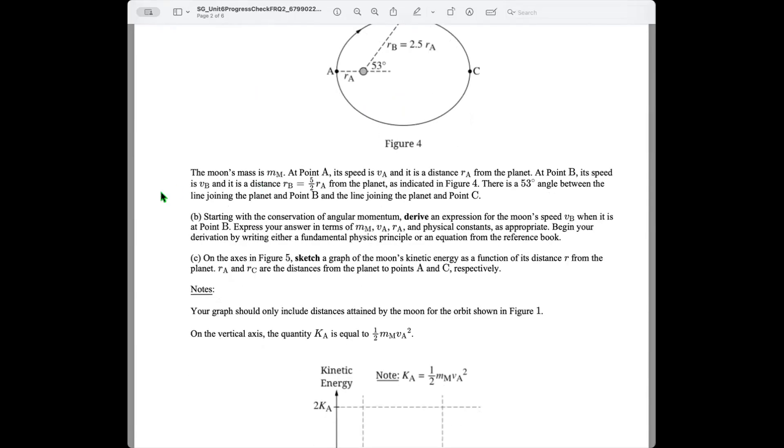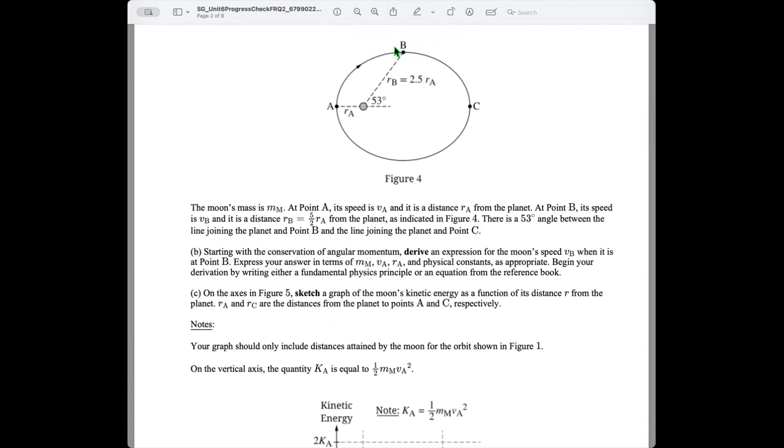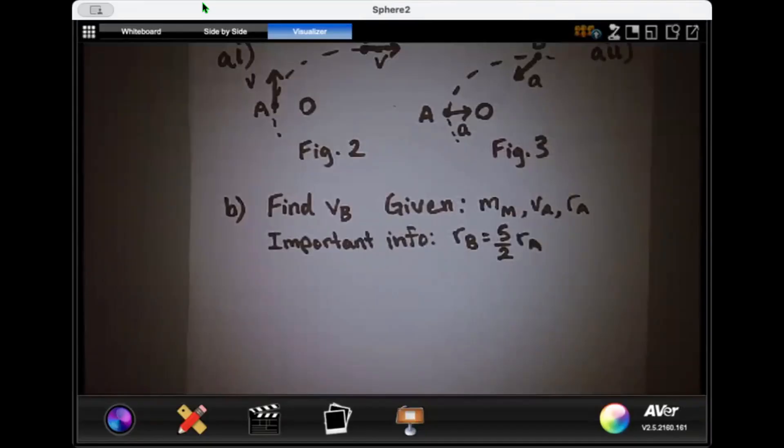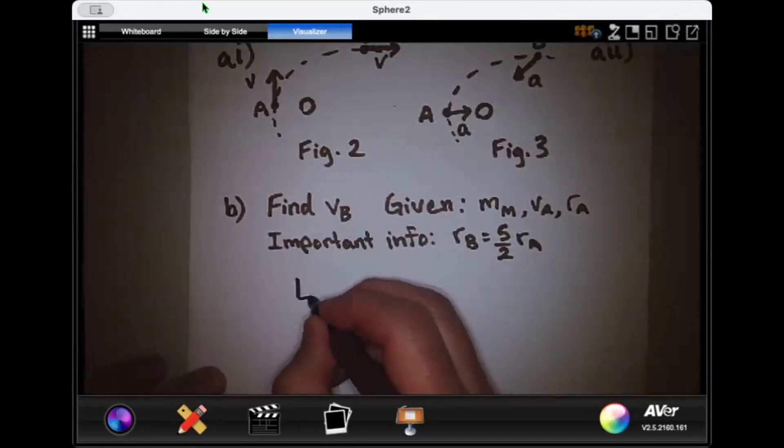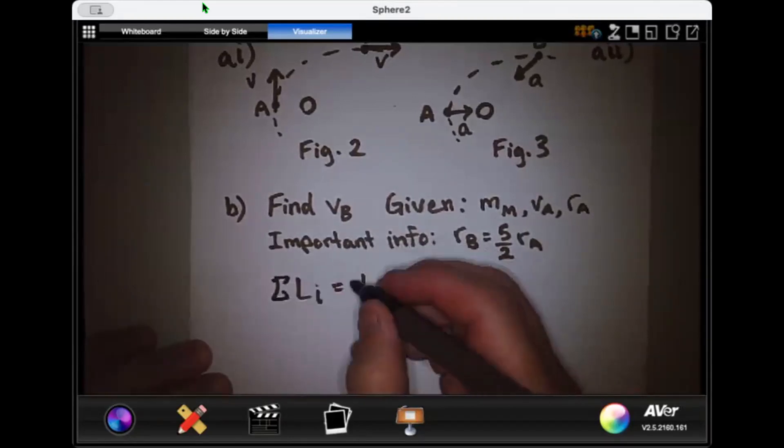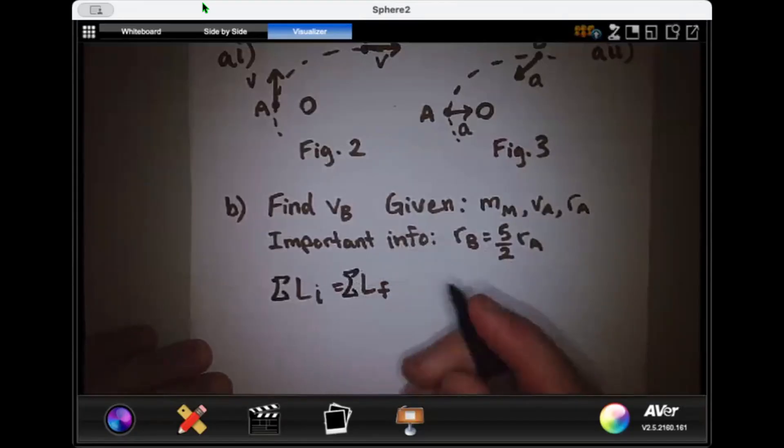Okay. Part B. Starting with the conservation of angular momentum, derive an expression for the moon's speed, VB, when it is at point B. Express your answer in terms of M sub M, VA, RA, and physical constants as appropriate. Begin your derivation by writing either a fundamental physics principle or an equation from the reference book. All right. So part B. Let's check out how to find VB using the conservation of angular momentum. That is to say the sum of my initial angular momentum will equal the sum of my final angular momentum.